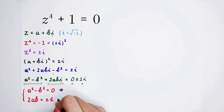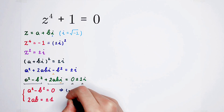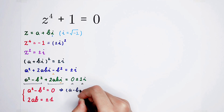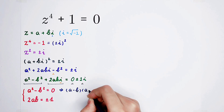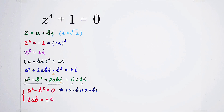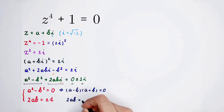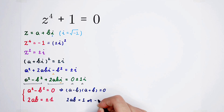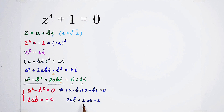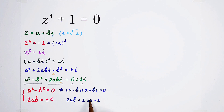From the first equation we can apply the third binomial formula: a minus b times a plus b equals 0. And from the second: 2ab equals 1 or negative 1. This gives four cases: a minus b equals 0 with 2ab equals 1; a minus b equals 0 with 2ab equals negative 1; a plus b equals 0 with 2ab equals 1; and a plus b equals 0 with 2ab equals negative 1.